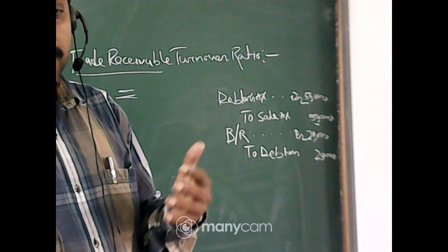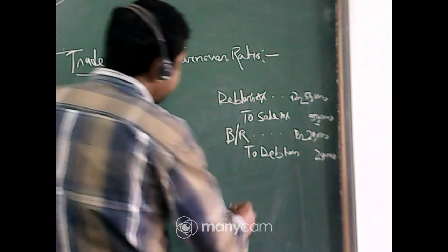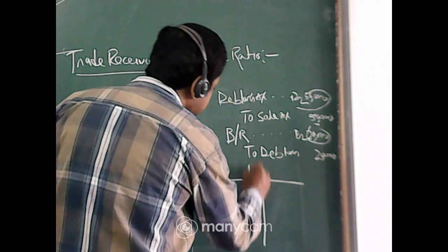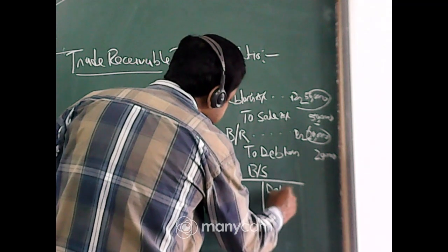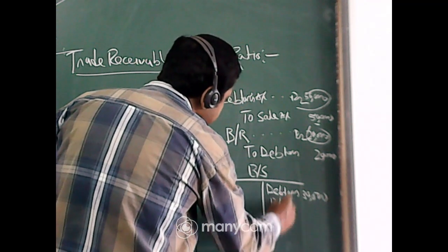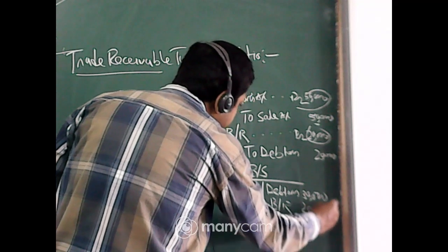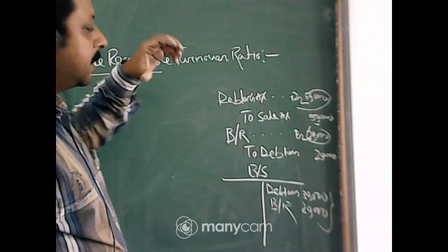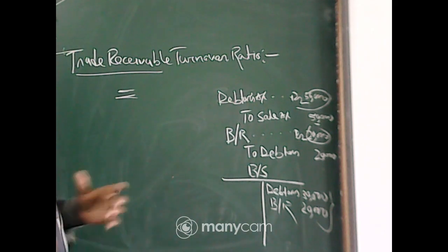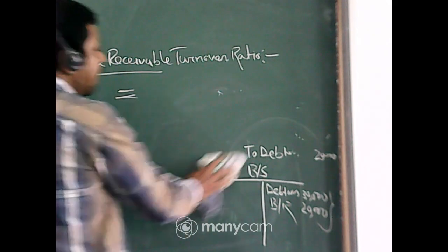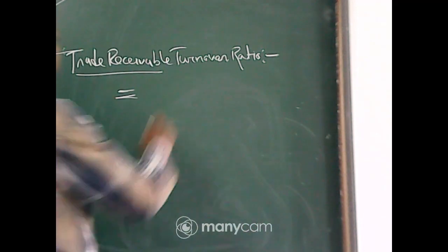Suppose out of 50,000 total debtors, 20,000 worth of debtors are considered unreliable, so you issue a bill receivable of 20,000 to receive your payment in time. When posting in the balance sheet, you write debtors rupees 30,000 and bills receivable rupees 20,000. So bills receivable is also part of debtors — both are from credit sales. Total trade receivable consists of two things: debtors and bills receivable.